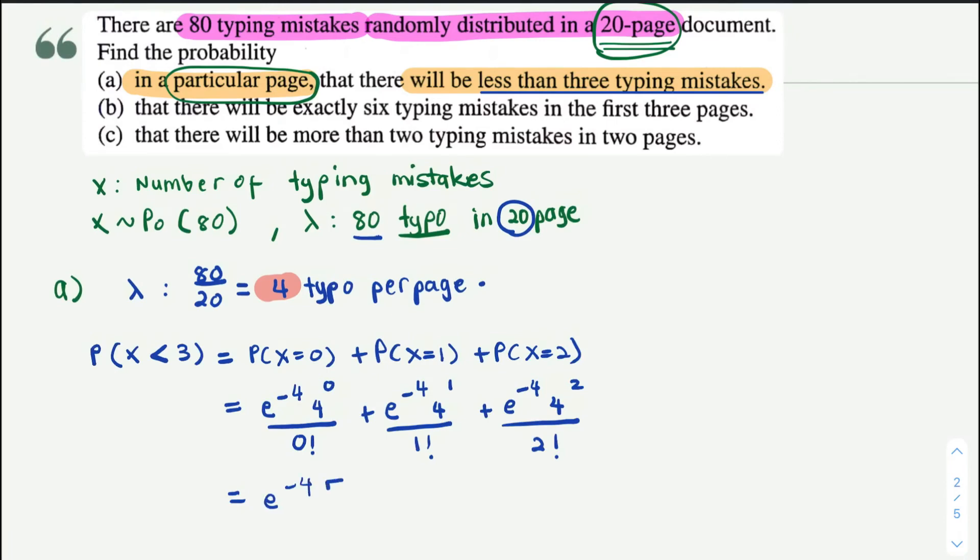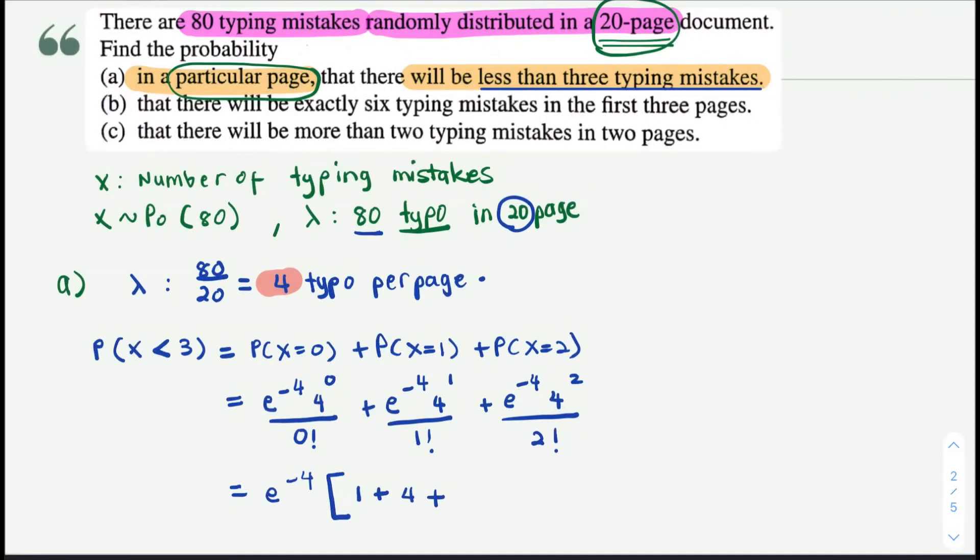Simplify so that it's easier for you to calculate, where the common term is e^(-4). 4^0 is 1, 0! is 1, so 1 over 1 is 1, plus 4^1 is 4 over 1!, so 4, plus 4^2 is 16 over 2! which is 2 times 1, equals 2.